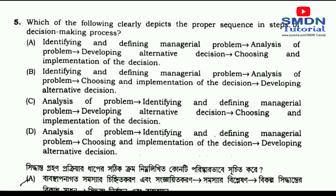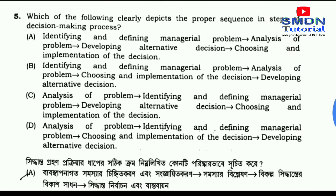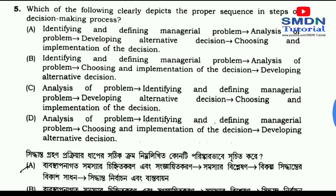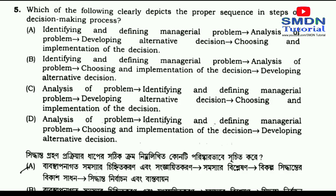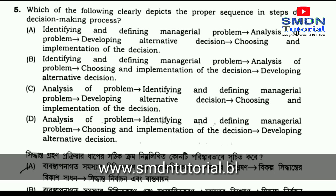Question number 5: Which of the following clearly depicts the proper sequence in steps of the decision-making process? The answer is option A. The sequence is: (1) Identifying and Defining Managerial Problems, (2) Analysis of Problems, (3) Developing Alternative Decisions, (4) Choosing and Implementation of the Decision.